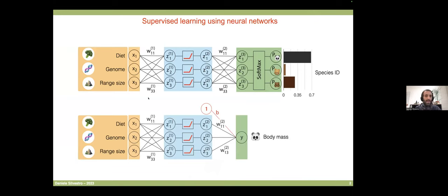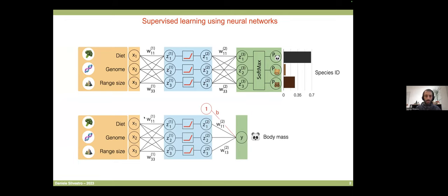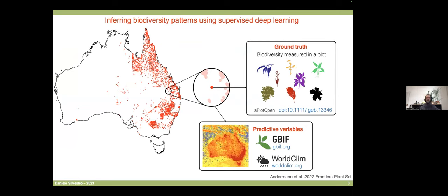The first thing I'd like to talk about is models based on supervised learning. In our applications, these are typically deep neural networks that can be used for classification or regression tasks — models that take a bunch of inputs and map them into an output. One way we use these models in biodiversity is to infer biodiversity in a spatial context.